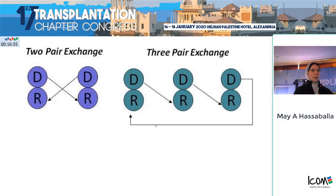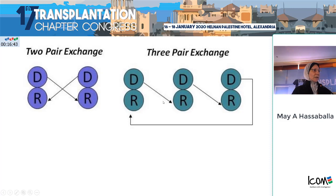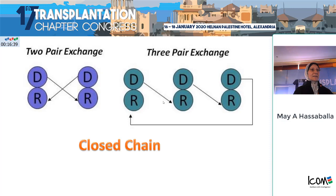When an incompatible donor gives to a compatible recipient and vice versa, we call this a two-pair exchange. You can also have a three-pair exchange or four-pair exchange, five-pair exchange. At the end of the day, it is a closed chain — it will come to an end.